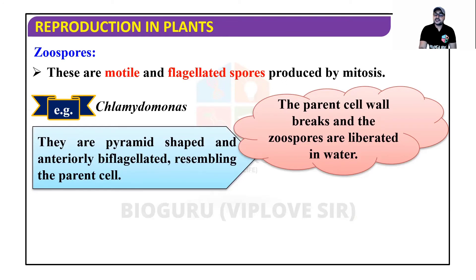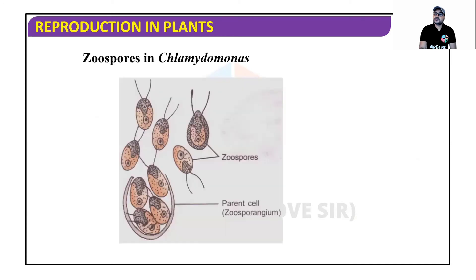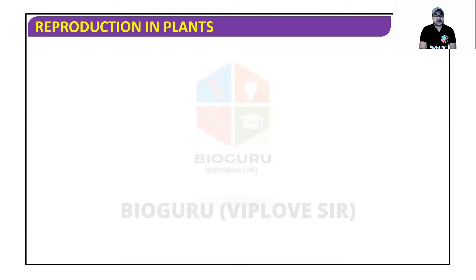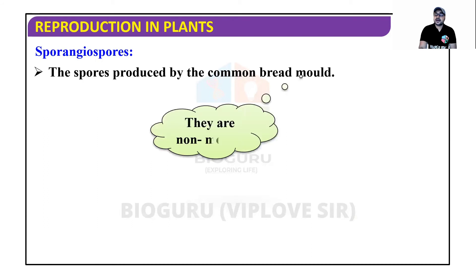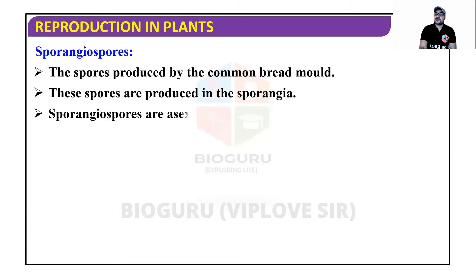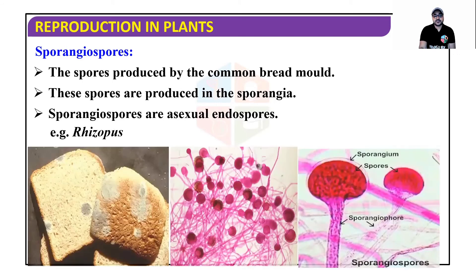Biflagellated means having two flagella. Next are sporangiospores — the spores produced by the common bread mold (Rhizopus). They are non-motile, which is why they are called aplanospores. These spores are produced inside structures called sporangia. Sporangiospores are asexual endospores. An example is Rhizopus.